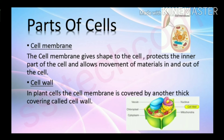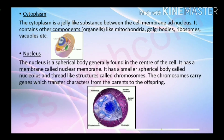The cell membrane protects the inner part of the cell and allows movement of material in and out of the cell. In plant cells, the cell membrane is covered by another thick covering called the cell wall.